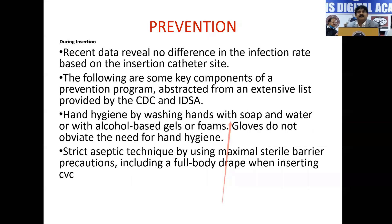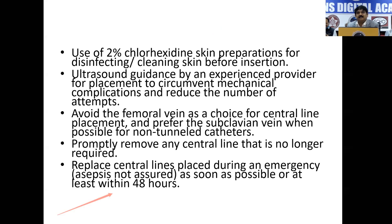Incidence is about 4.1 per 1,000 central venous days and it can be prevented. Recent data reveal no difference in infection rate based on the insertion catheter site — though subclavia is most preferred, then jugular, then femoral. Hand hygiene, use 2% chlorhexidine skin preparation before insertion, always try to use ultrasound guidance to prevent multiple punctures and attempts, and avoid femoral line as much as possible. Prevention: disinfect catheter hubs, injection ports, and other connections before accessing the line. Replace administration sets every 96 hours. Assess the need for central line daily.